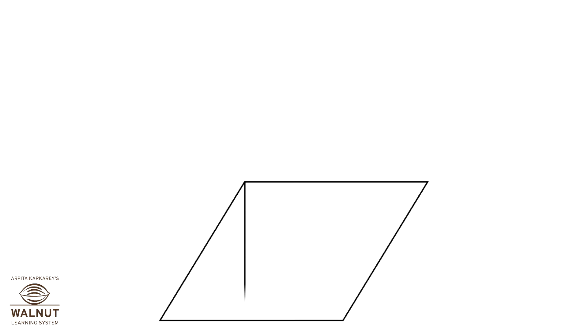From the top left corner of the parallelogram, draw an altitude to the base of the parallelogram. And now cut off the triangle to the left of this line. Flip that triangle and place it on the right side of the parallelogram.